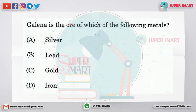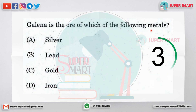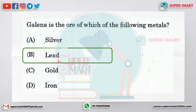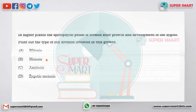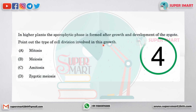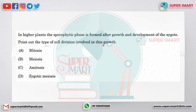Galena is the ore of which of the following metal? In higher plants, the sporophytic phase is formed after growth and development of a zygote. What type of cell division is involved in this growth? The answer is mitosis.